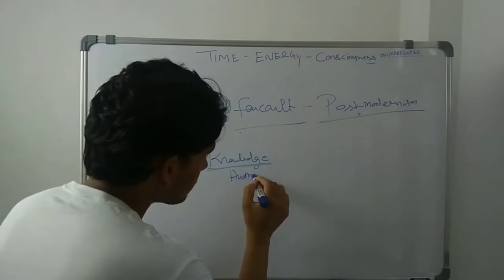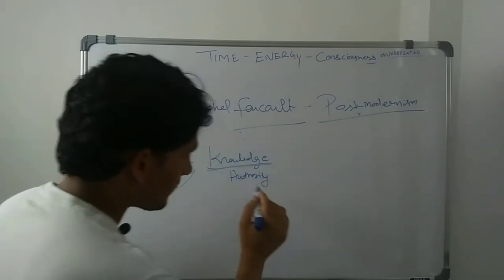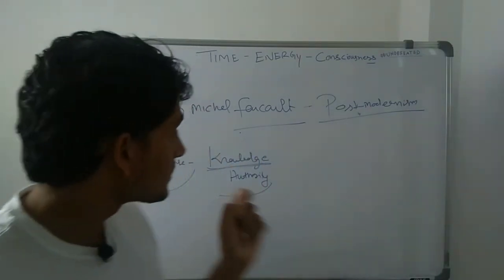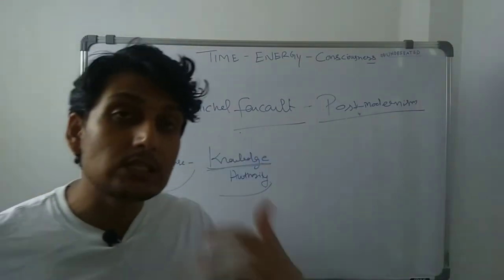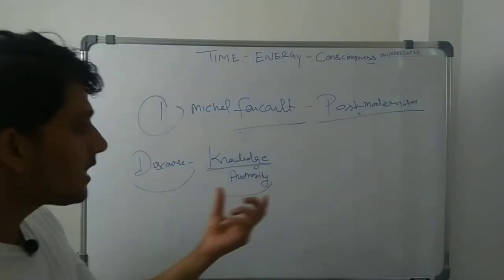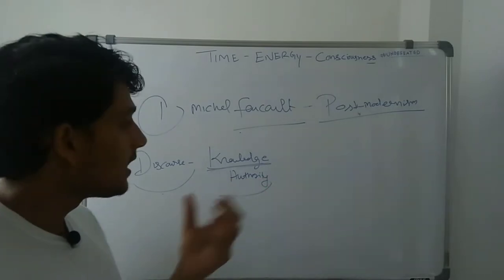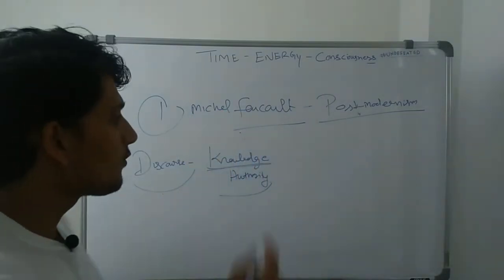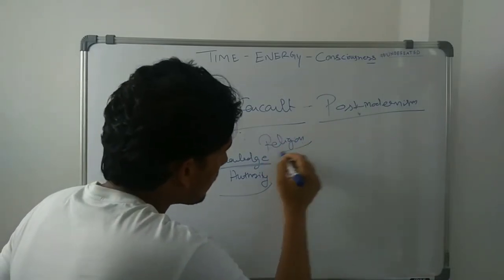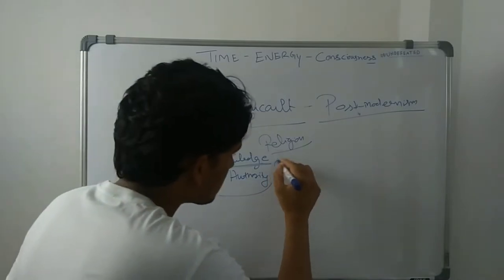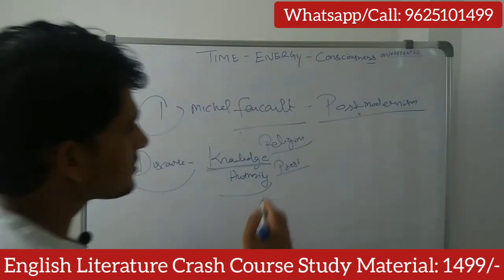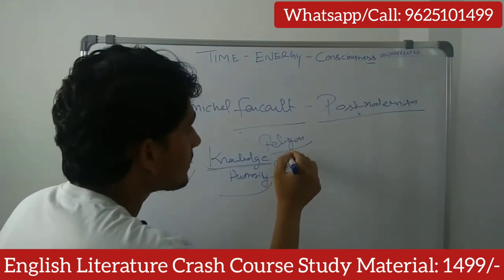The authority creates the object always, just because they are the authoritarian people and they have knowledge about a certain topic. For example, religion. Who has the knowledge about religion? The priest. The priest is the authority and he is having a discourse on religion.